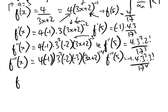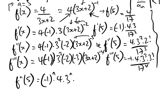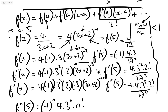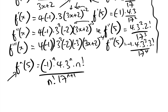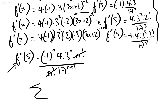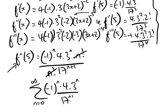Now we've got the pattern. The nth derivative evaluated at 5 is f to the n of 5 equals minus 1 to the n times 4 times 3 to the n times n factorial over 17 to the power of n plus 1. The nth term of the Taylor expansion is this divided by n factorial, and the n factorial cancels out. So the sum equals the sum from n equals 0 to infinity of minus 1 to the n times 4 times 3 to the n over 17 to the n plus 1 times (x minus 5) to the n.